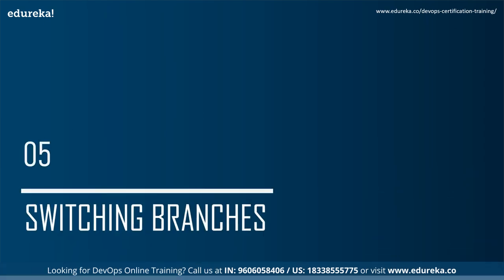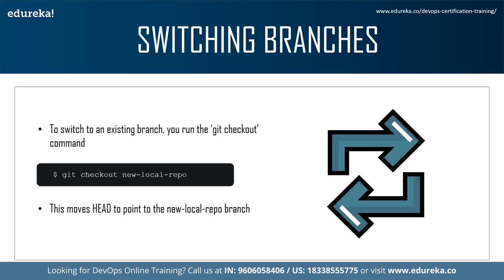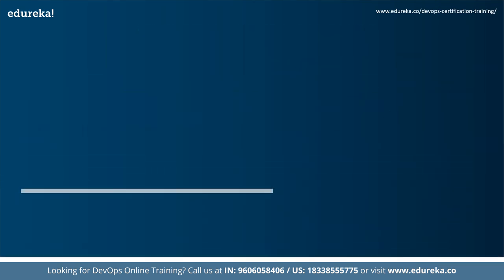Switching branches is a relatively easy concept. You can switch to an existing branch using the checkout keyword. To switch to the new-local-repo branch, type: git checkout new-local-repo. This moves HEAD to point to the new-local-repo branch — HEAD is simply a pointer that moves to whichever branch you're on. If you want to move your pointer back to the master branch, you just type: git checkout master. Switching branches is extremely simple using the checkout keyword.